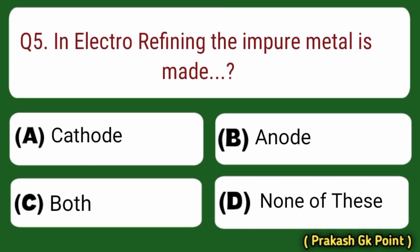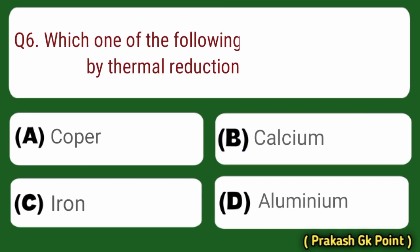Next question: in electro-refining, the impure metal is made from? Answer: Option B — Anode.